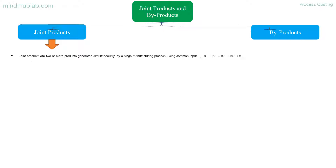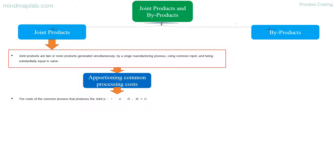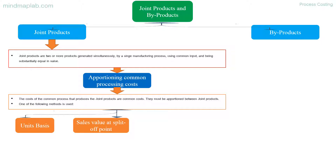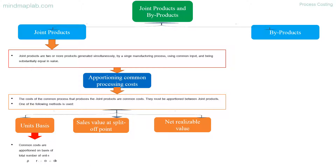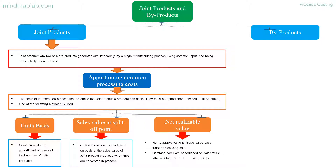Joint products are two or more products generated simultaneously by a single manufacturing process using common inputs and being substantially equal in value. The costs of the common process are common costs that must be apportioned between joint products using one of the following methods: units basis — apportioned on total number of units produced; sales value at split-off point — apportioned on the basis of sales value of each joint product when separated; or net realizable value — sales value less further processing costs, with common costs apportioned on that basis.